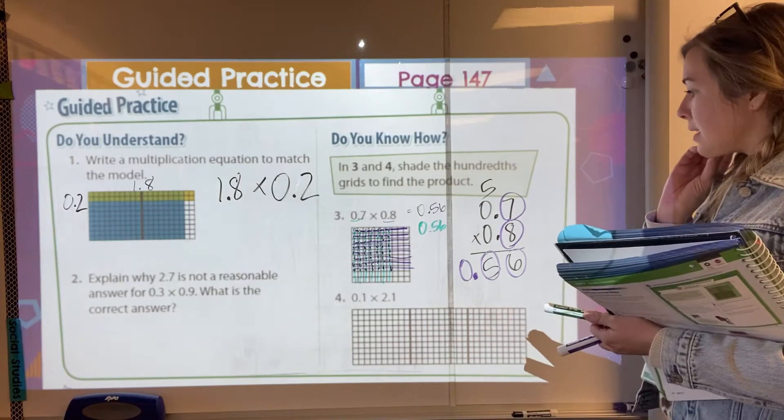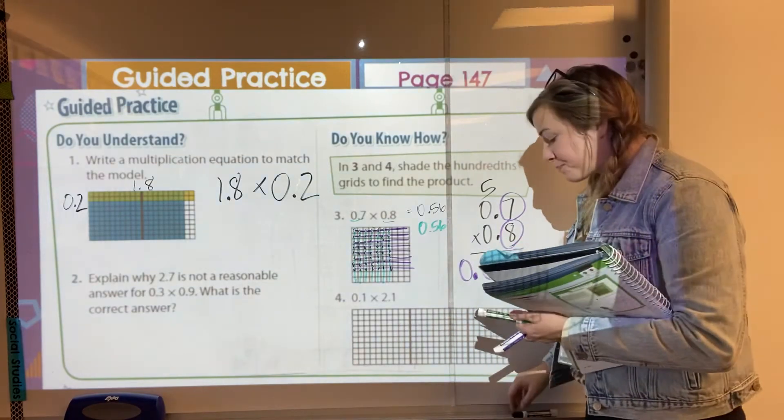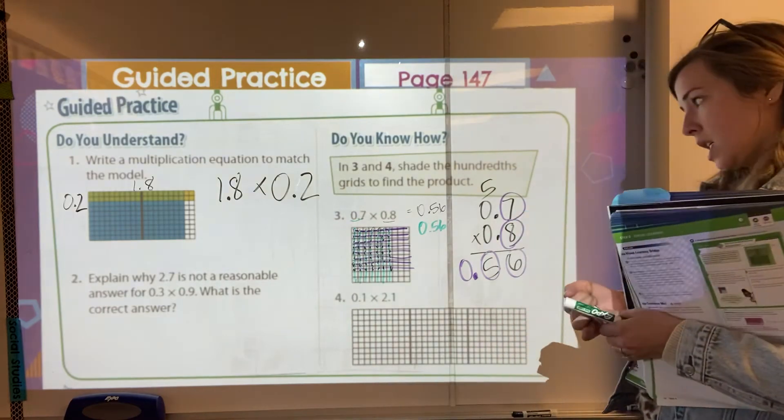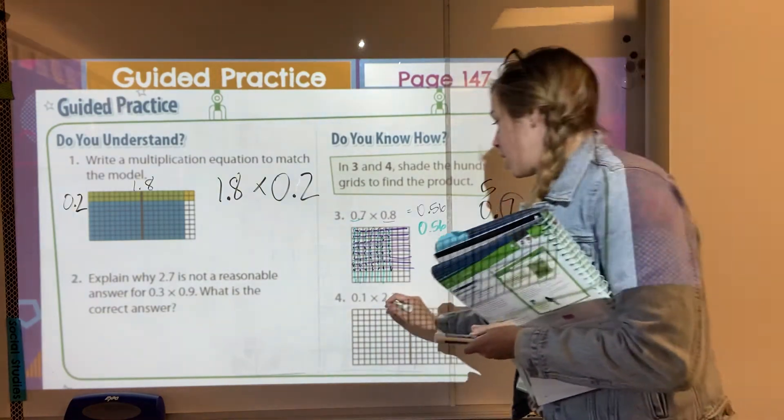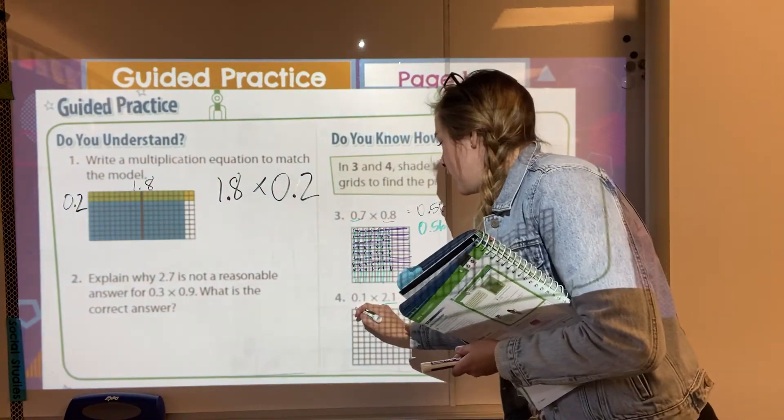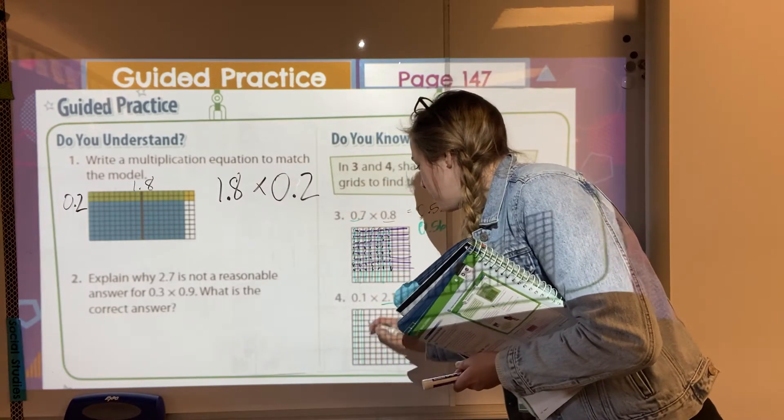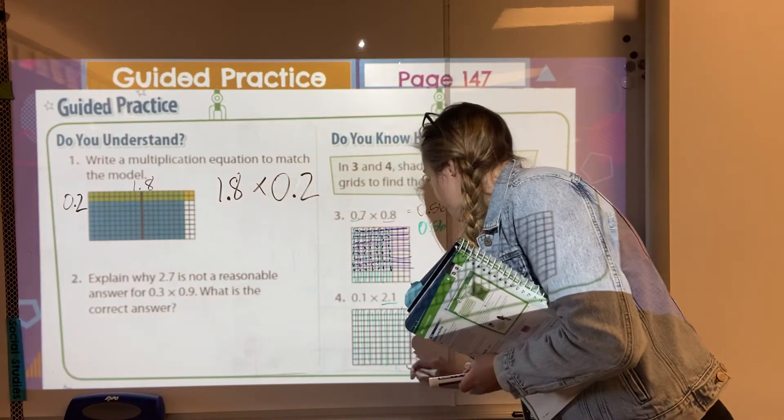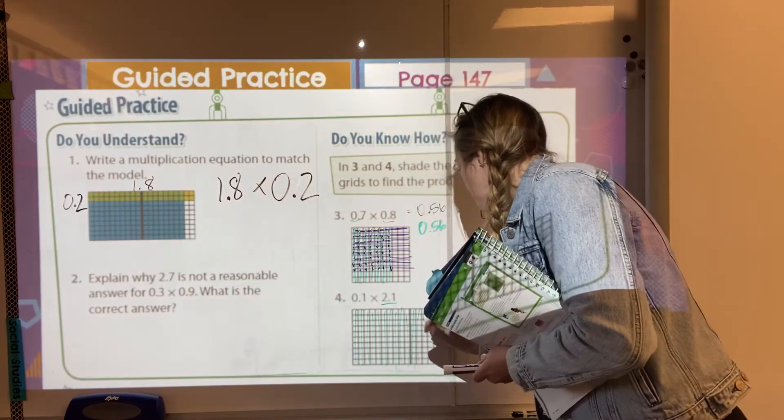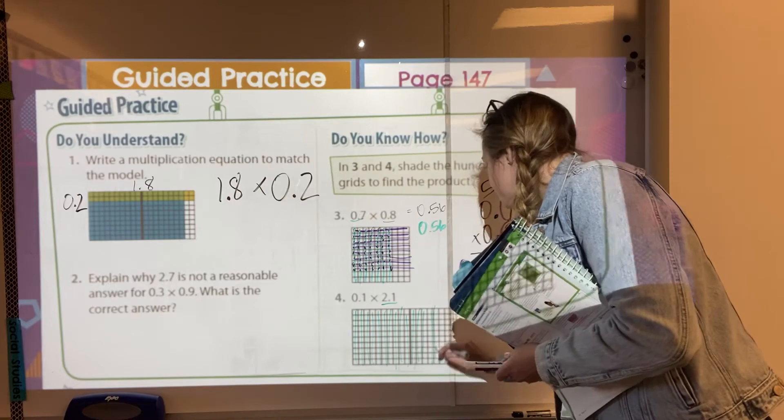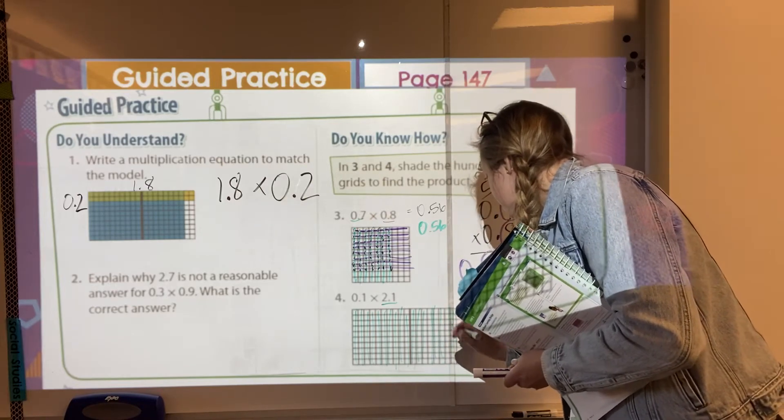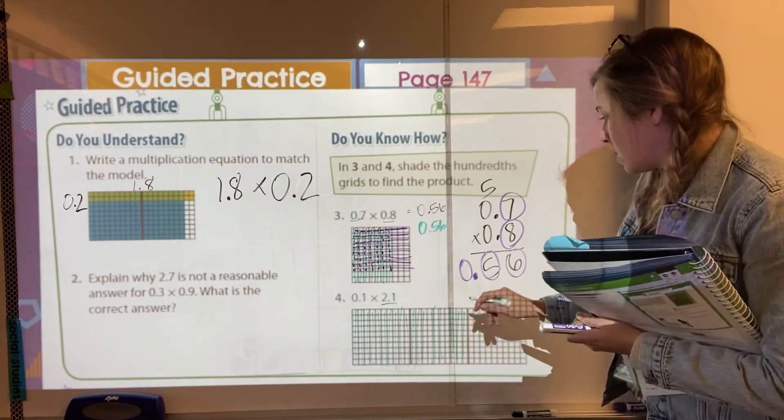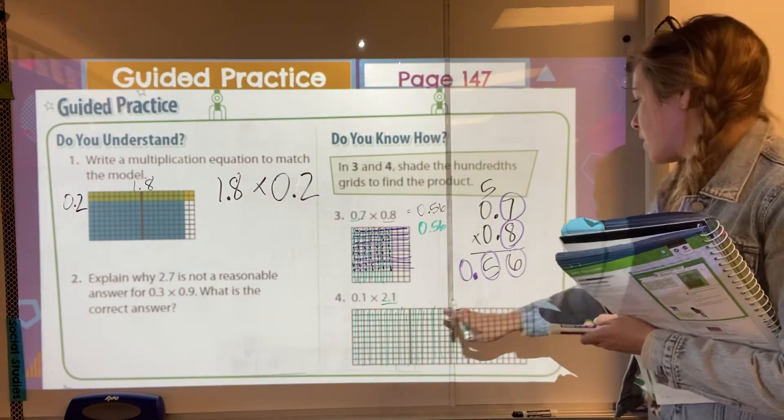Okay. Let's look at number four. So what we have here is our two and one tenths, which I guess I will color in. So I'm going to have totally shaded in two. There's one whole. There's two holes. Sorry.